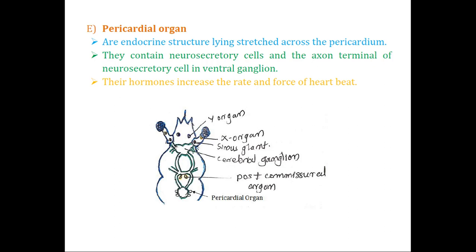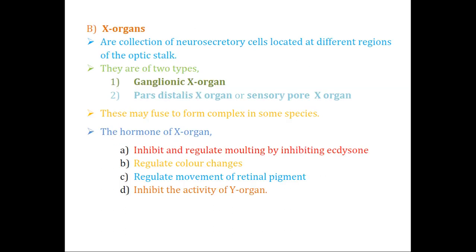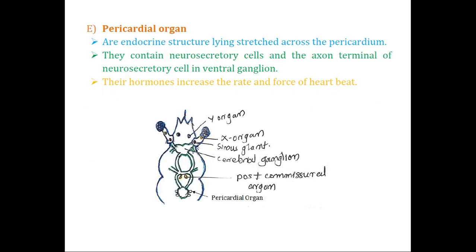To summarize, there are five different types of neuroendocrine organs in crustaceans: the sinus gland at the base of the optic stalk; the X-organ scattered within the optic stalk; the Y-organ in the maxillary segment; the post-commissural organ located after the commissure; and the pericardial organ stretched around the pericardium surrounding the heart.